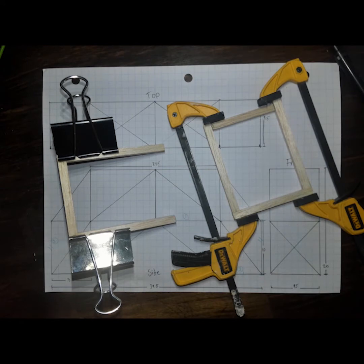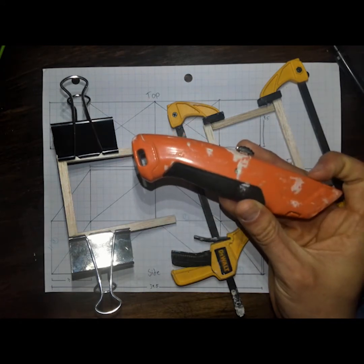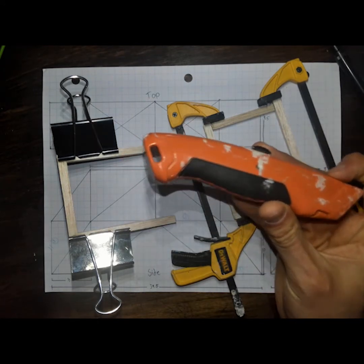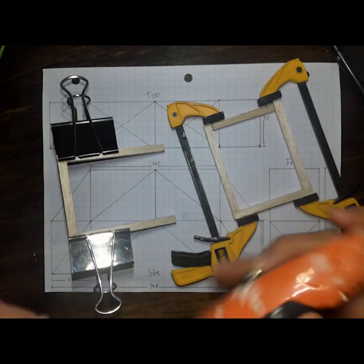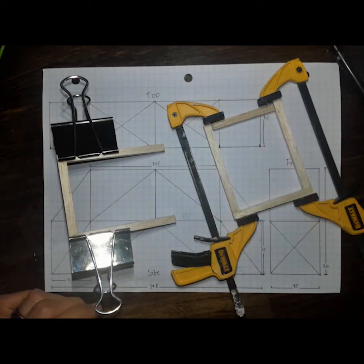Alright, so you will need a cutting tool, preferably a box cutter. If you can't get your hands on this, just get something that could just make an incision on your balsa wood and then just snap it. Alright, so please enjoy this video and try it out.